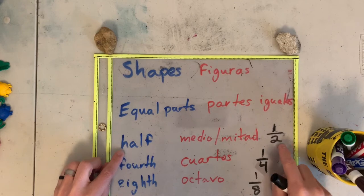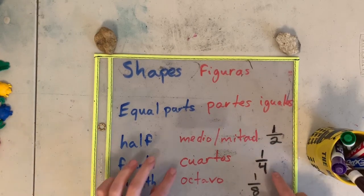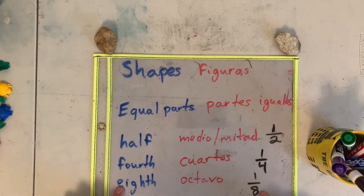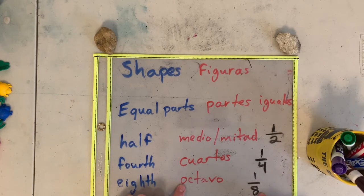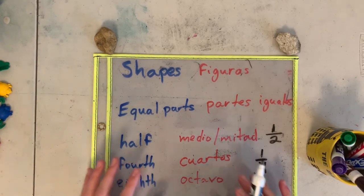We have one half, un medio; one fourth, un cuarto; one eighth, un octavo. Just remember these words because these are the ones that you need to label on your shapes.